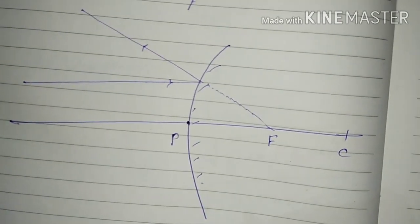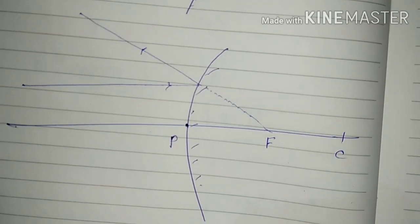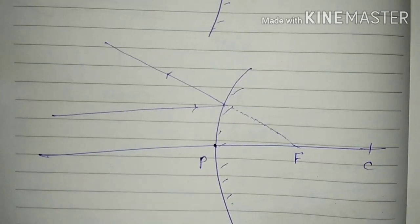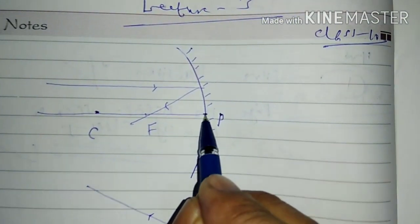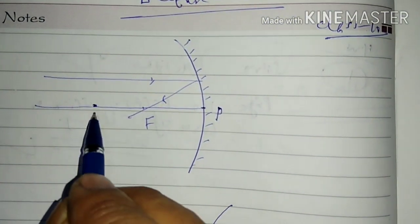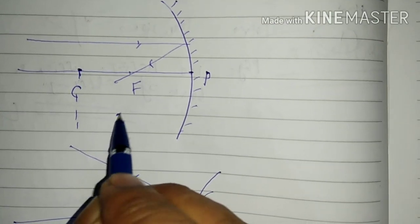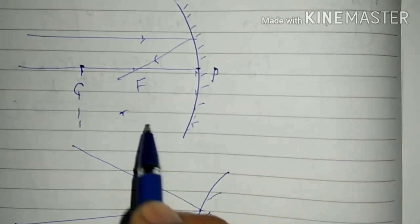Why we are reciting these things? Because there is a very important relation between different physical quantities involved during solving problems of a spherical mirror. The distance between the center of curvature and the pole is called the radius of curvature.